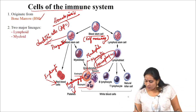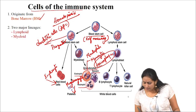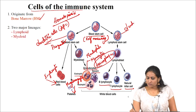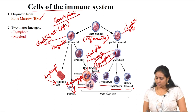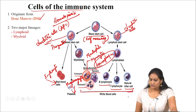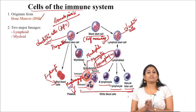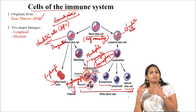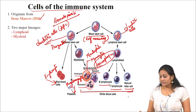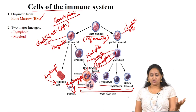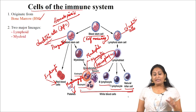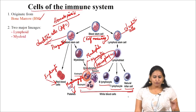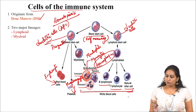The lymphoid stem cell lineage gives rise to lymphocytes — again divided into B lymphocytes, T lymphocytes, and natural killer cells — and also to dendritic cells. These are all WBC cells. Natural killer cells differ from B and T lymphocytes in that they lack surface receptors; they are also large cells, whereas B and T cells are small naive cells.